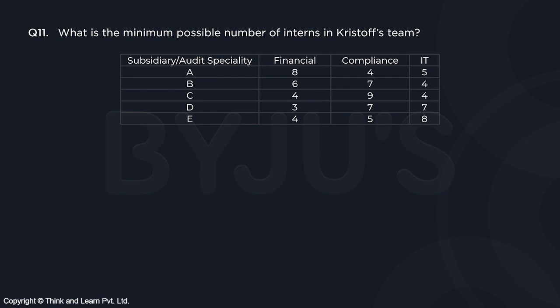Question number 11: What is the minimum possible number of interns in Christopher's team? To have the minimum possible number of interns, we need the maximum possible number of permanent employees. For financial, we cannot have more than three permanent employees, and then no more than four for compliance and four for IT.